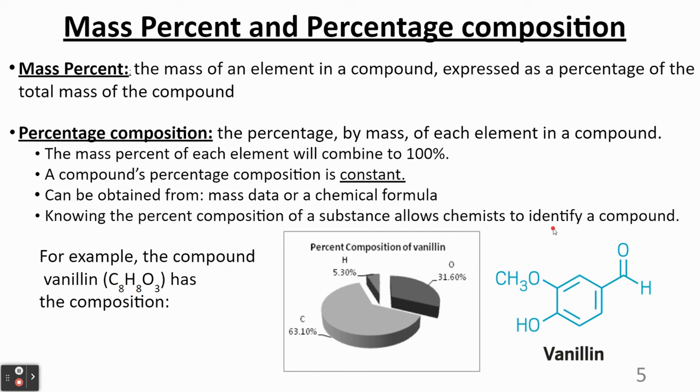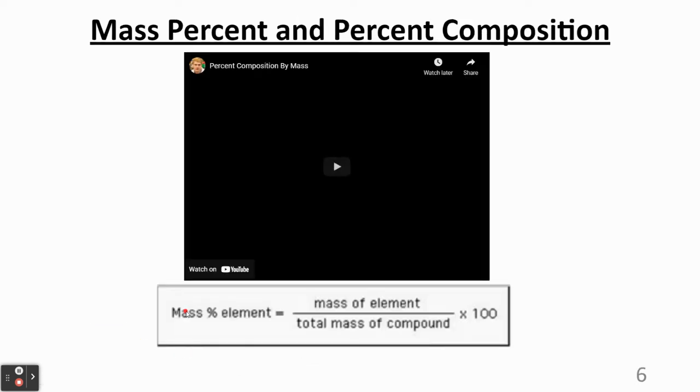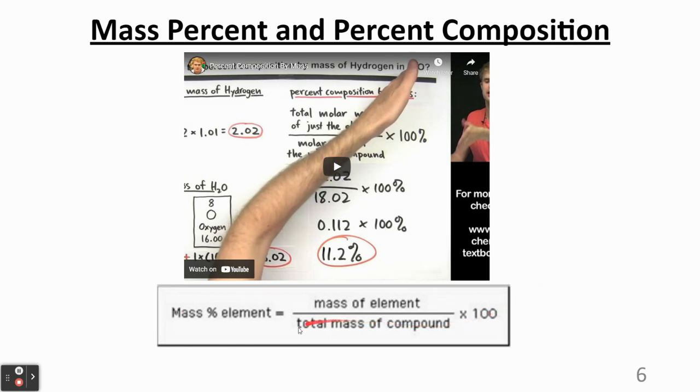So if you have a mystery substance you're trying to figure out, and you figure out its percentage composition, you can use certain techniques and strategies in math to figure out what the formula for that compound actually is. So in our next video, we're going to take a look at how to calculate percentage compositions for a variety of compounds from either mass data or from the formula.